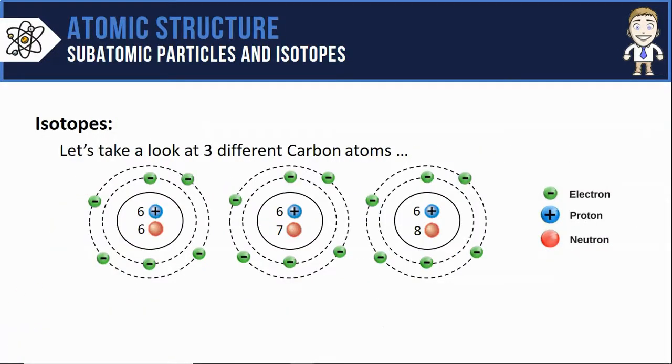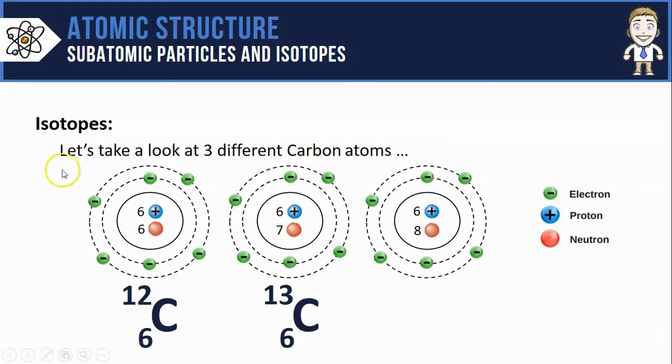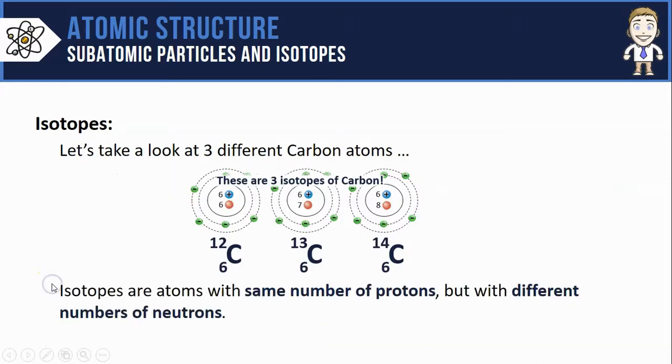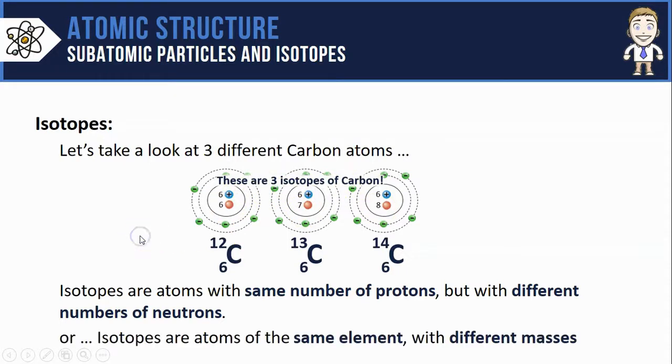So with that, we're finally in a good place to talk about isotopes. Let's take a look at these three different carbon atoms I've selected here. The first one is carbon with a mass of 12, the next one has an extra neutron giving it a mass of 13, and the last one has a mass of 14. I've chosen these three atoms very specifically because they are three isotopes of carbon, and they're just a nice way to build a working definition for what isotopes actually are. Isotopes are atoms with the same number of protons - all three of these have 6 protons - but with different numbers of neutrons: 6 here, 7 here, and 8 there.